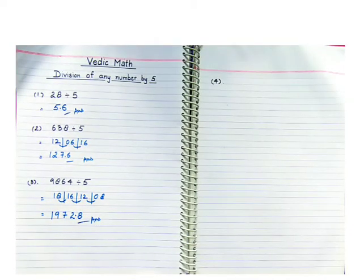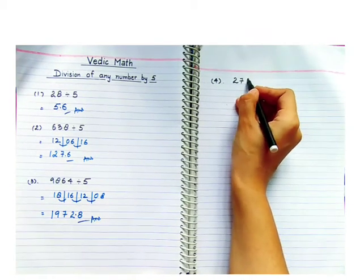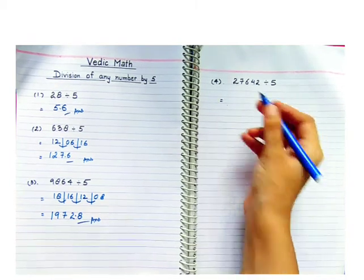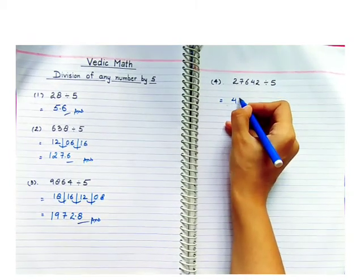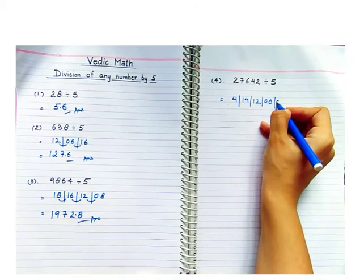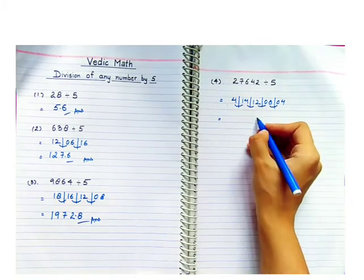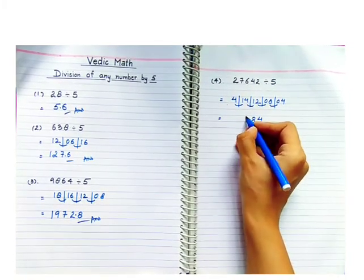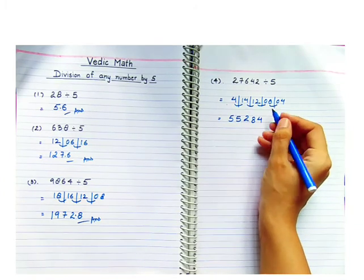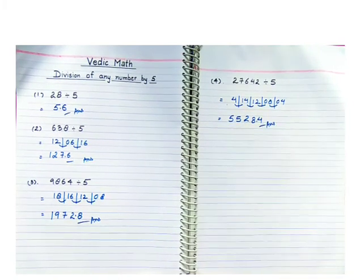Question number four: I'll be taking a five-digit number. Let's take 27642 divided by 5. First step is we have to double this number. This two becomes four, seven becomes fourteen, six becomes twelve, four becomes eight, and this two becomes four. Now balance it. We all know balancing - we have learned already. Now here comes four, five, five, two, eight. Next step is we have to put the point before one digit. So here comes 5528.4. Very easy.